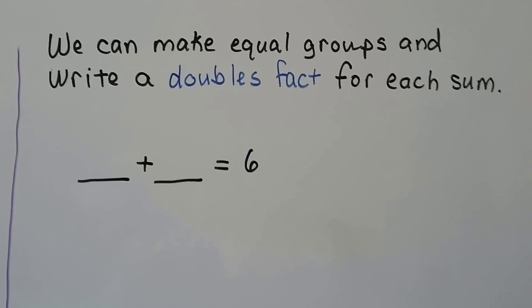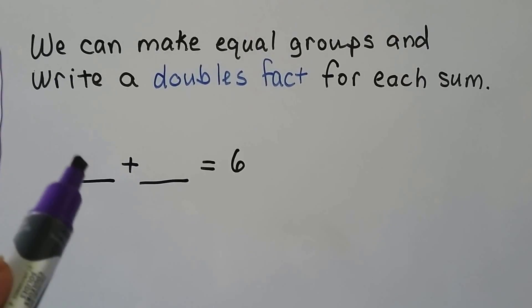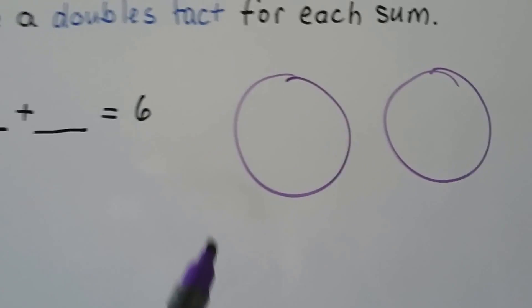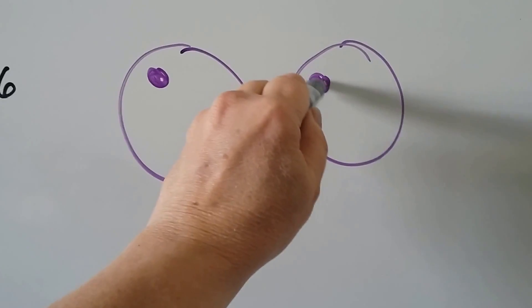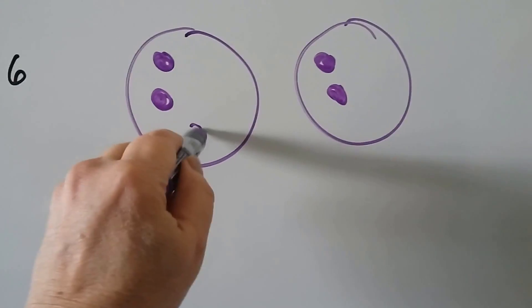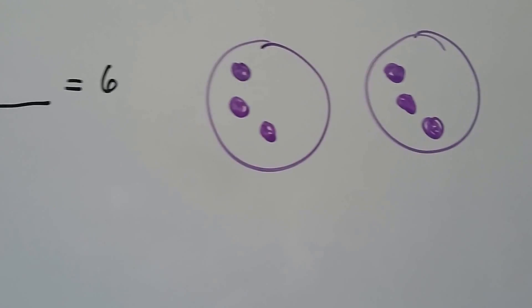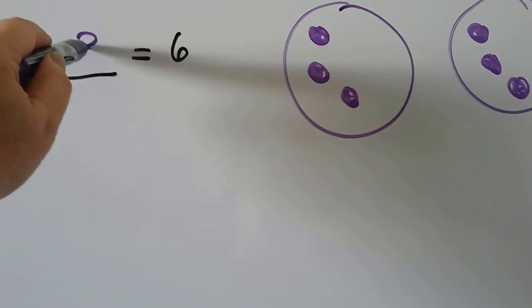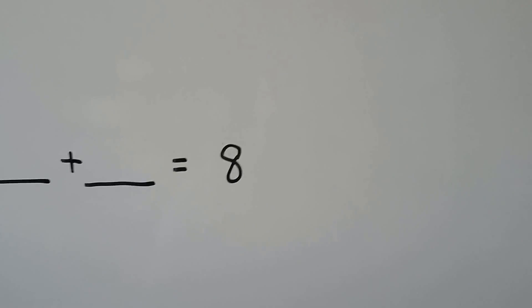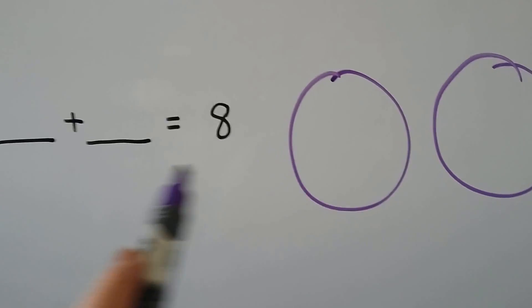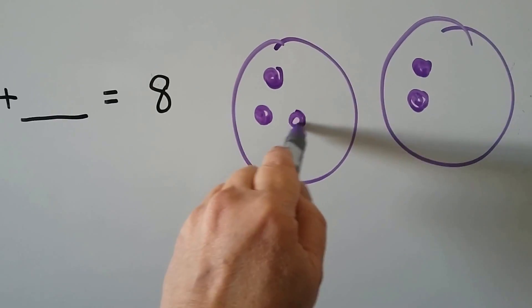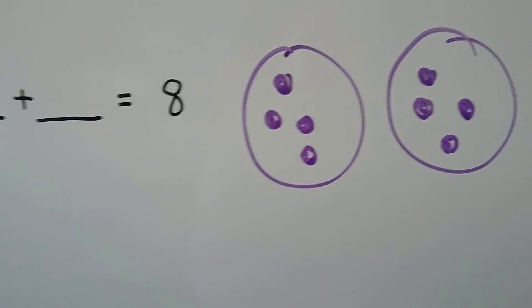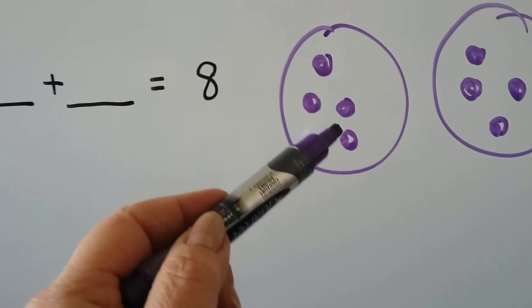We can make equal groups and write a doubles fact for each sum. We need to find something plus something equals 6. We make two big groups and take turns placing dots equally. Counting up to 6: 1, 2, 3, 4, 5, 6. How many did we put in each group? We put 3. So 3 plus 3 is equal to 6. Let's try that again for 8. We make two big groups and take turns putting dots in them counting up to 8: 1, 2, 3, 4, 5, 6, 7, 8. How many dots in each group? 4. So 4 plus 4 is equal to 8.